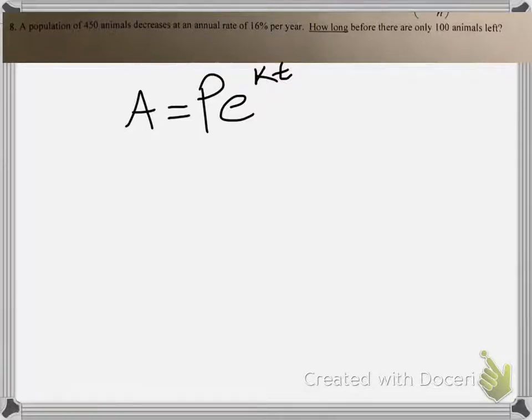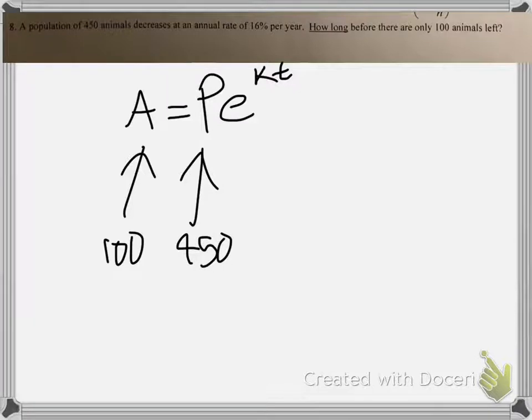It's going to be a population of 450 animals decreased at an annual rate. This one's 450, right? That's how much it's starting off with. How long would it take before they're 100? So this is 100. Alright, and this is 450. Alright, so let's go ahead and plug them in.